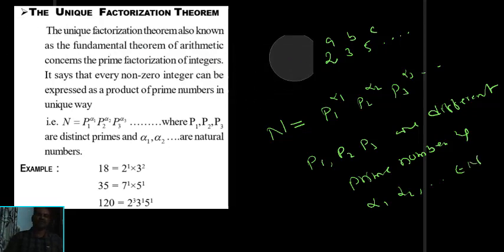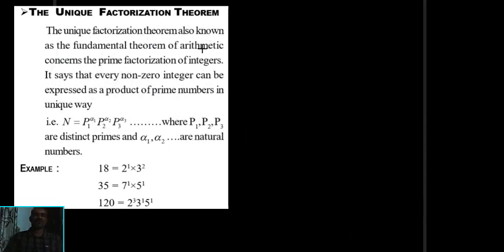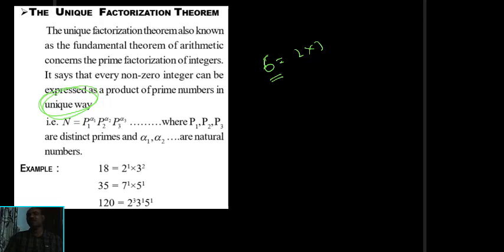This is called the unique prime factorization theorem, also known as the fundamental theorem of arithmetic — it concerns the prime factorization of integers. It says that every non-zero integer can be expressed as the product of prime numbers in a unique way. For example, 6 can be written as a product of prime numbers uniquely as 2 × 3. The uniqueness means you cannot write 6 as a product of primes other than 2 and 3.